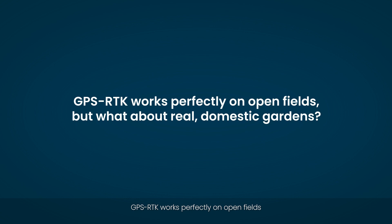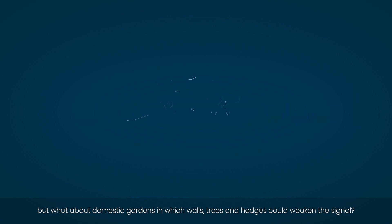GPS RTK works perfectly on open fields, but what about domestic gardens, in which walls, trees and hedges could weaken the signal?